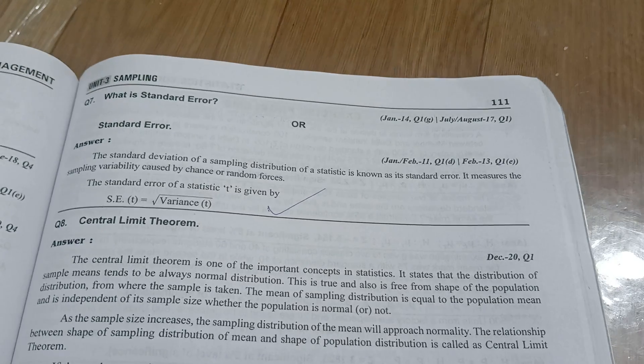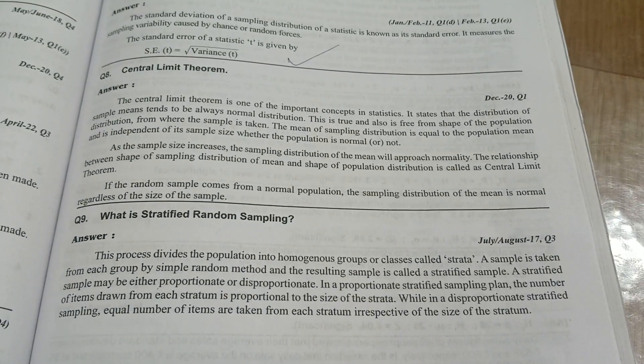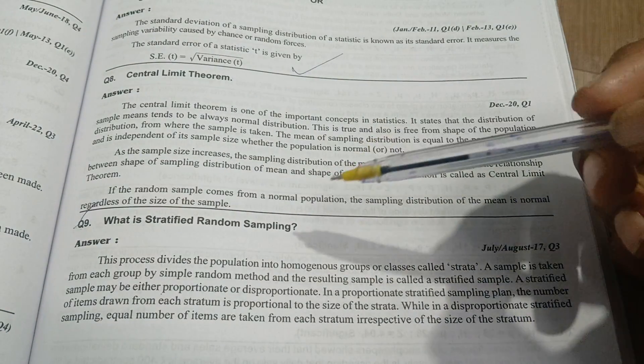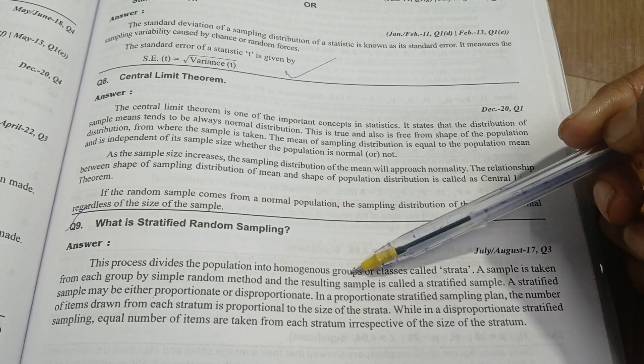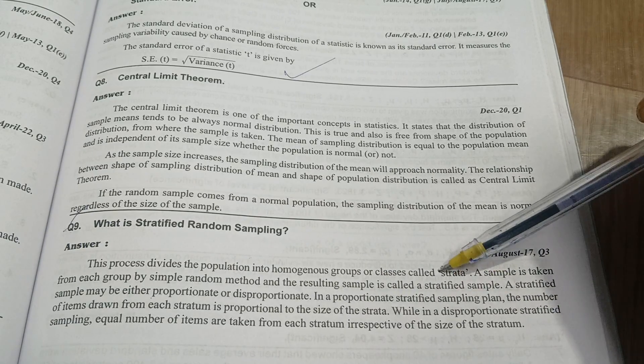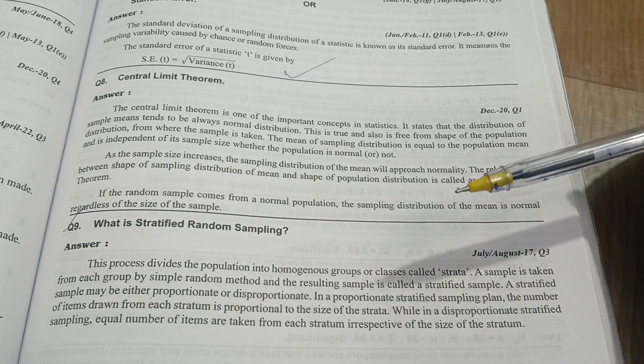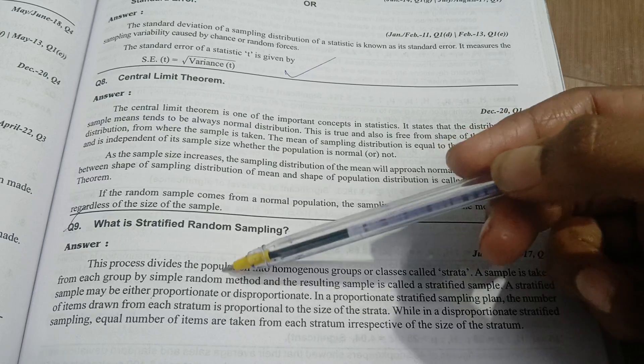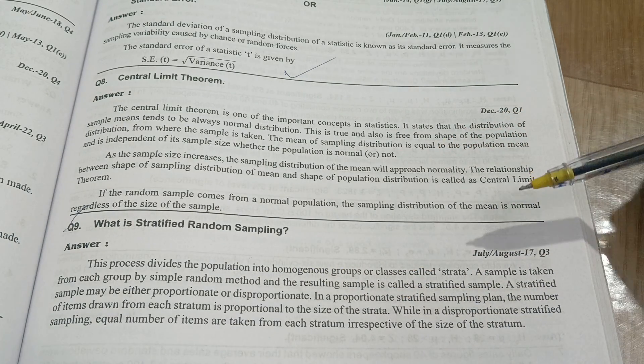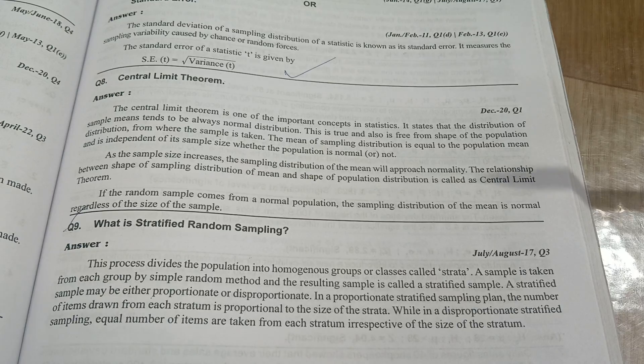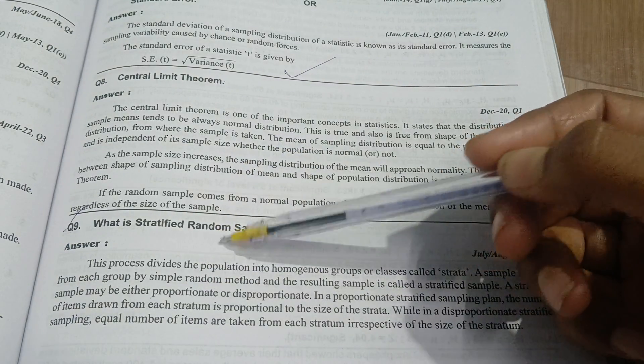Next, and the last one, you are having stratified random sampling. Stratified random sampling is a process which divides the population into homogeneous groups, that is called strata. A sample is taken from each group by simple random method, and the resulting sample is called stratified sampling. These are the things of stratified random sampling.